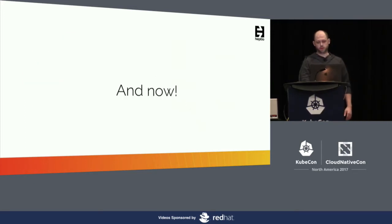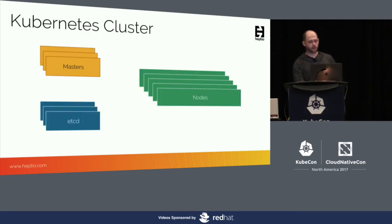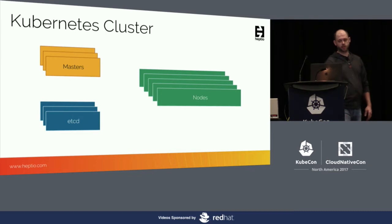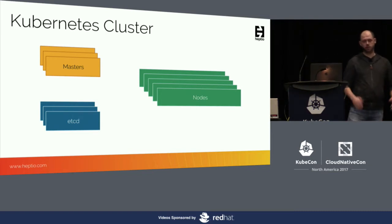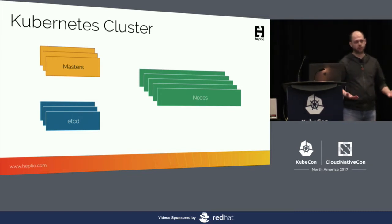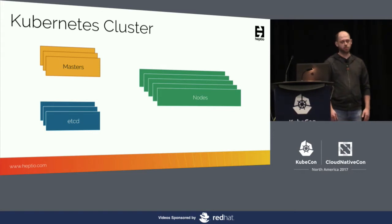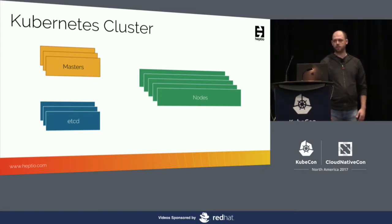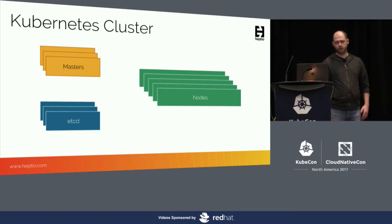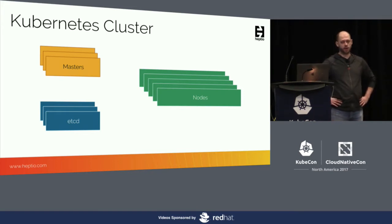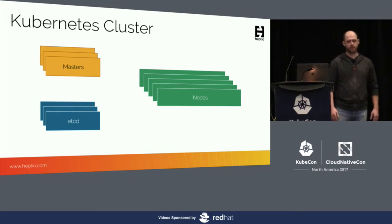In the new world with Kubernetes, things look a little bit different. When you're running a Kubernetes cluster, you don't just have one server. You have one or more masters running the Kubernetes control plane, you have many nodes running Kubernetes components as well as all of your containerized workloads, and then you also have an etcd cluster — which may be running in or outside of your Kubernetes cluster — and this is actually storing all of your Kubernetes state information.